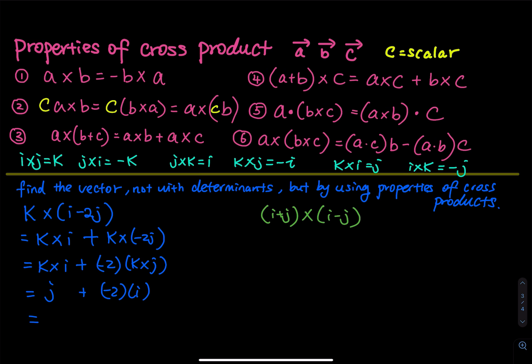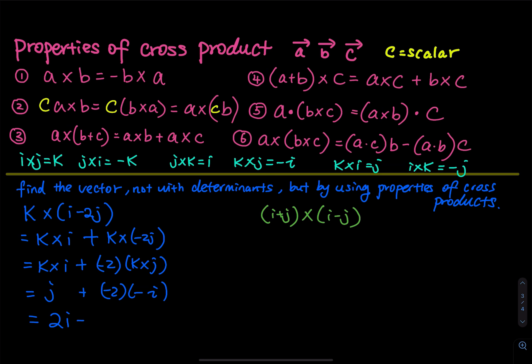Wait — k cross j is negative i, so negative times negative 2 gives positive. Then we have 2i plus j. That is the answer.